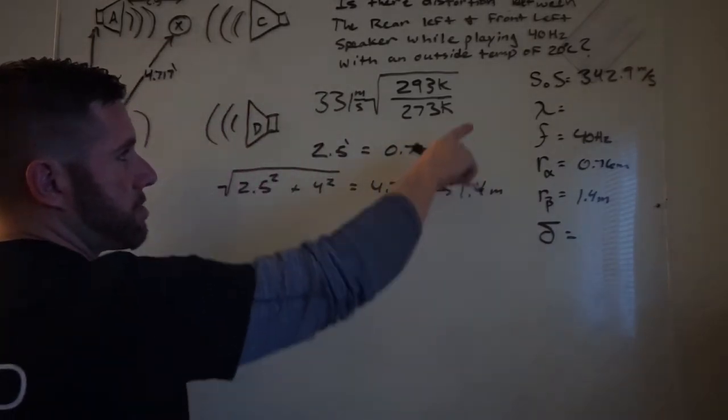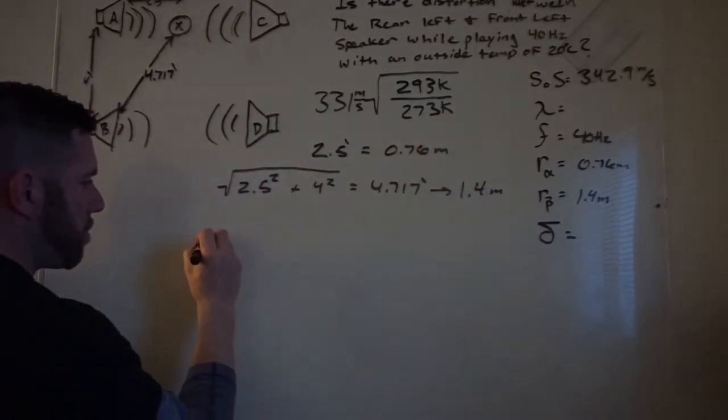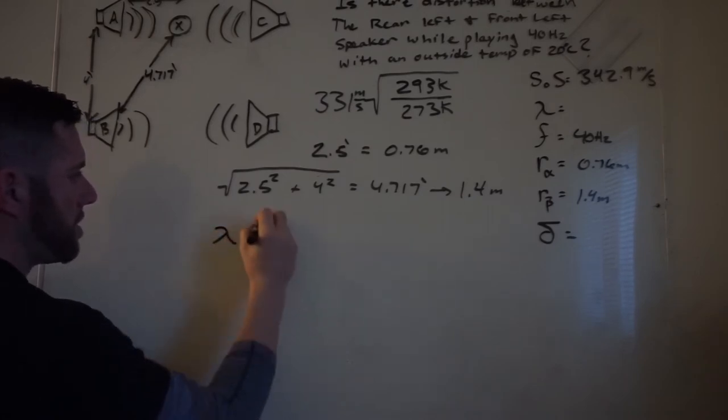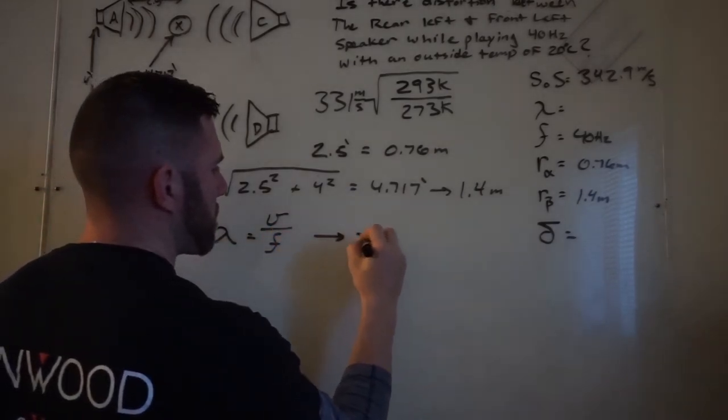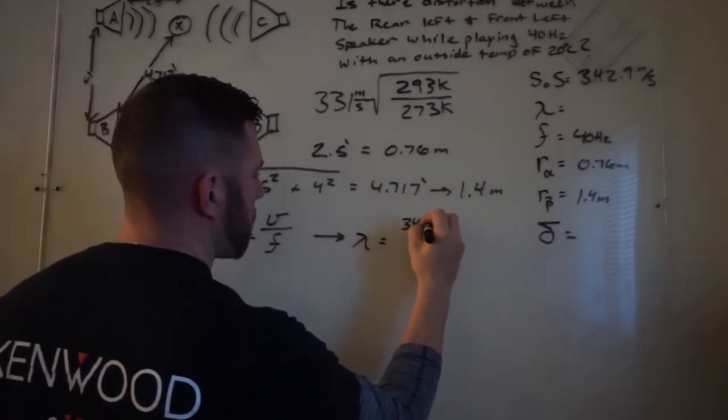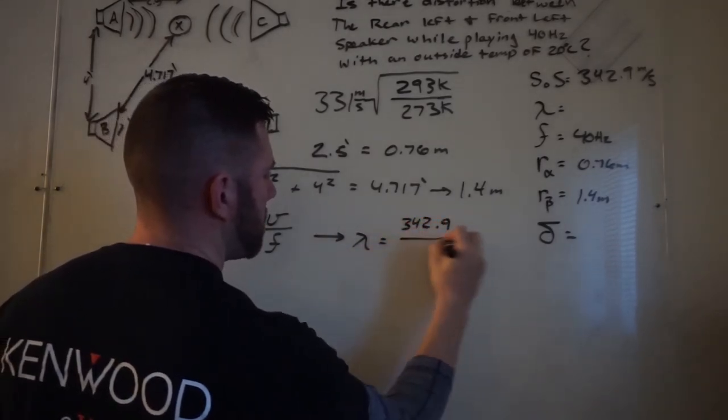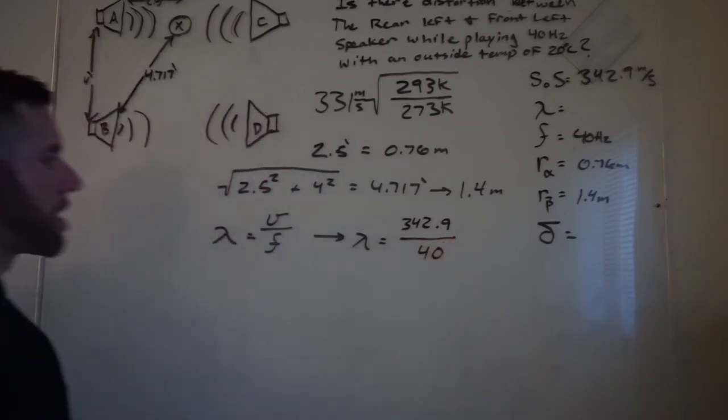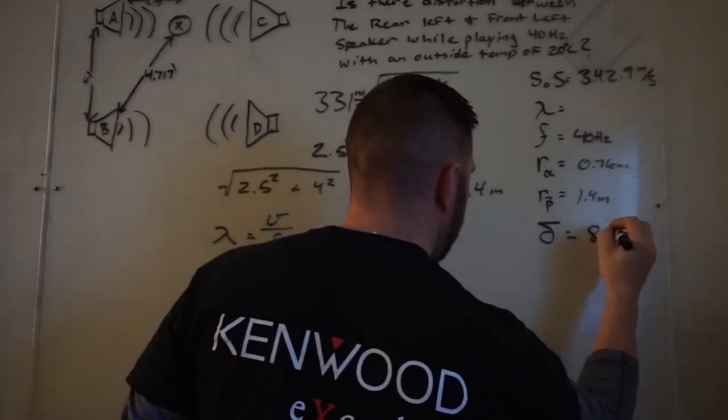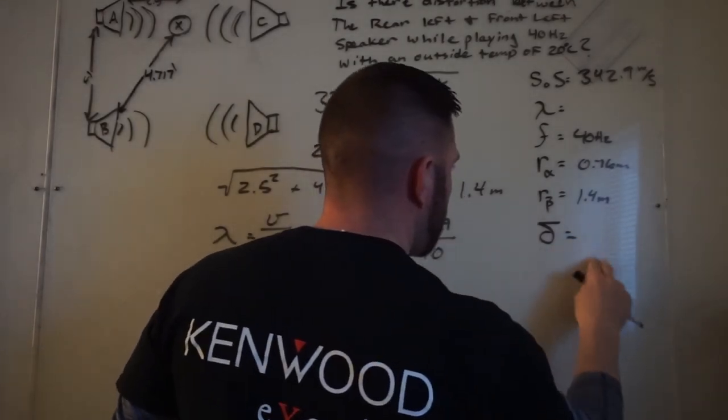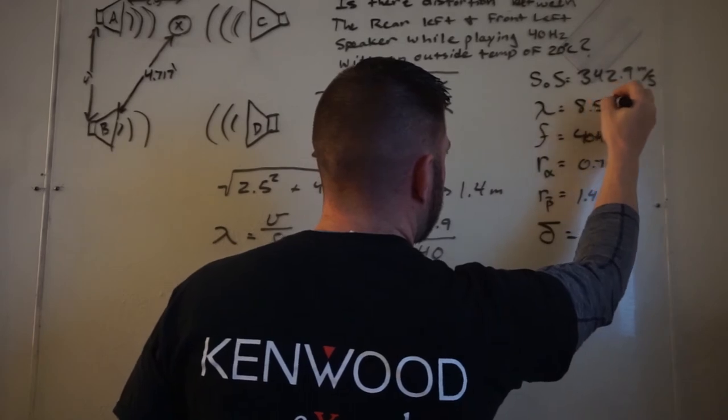Now, the next thing we need to get is we need to get the wavelength. Wavelength is described as velocity over frequency, which comes out to be wavelength equals 342.9 over 40. And that value that you get right there is going to be in meters. It's not going to be anything else. It's just going to be in meters. And that is going to be 8.57.